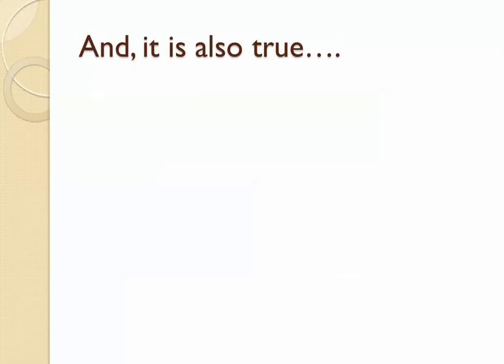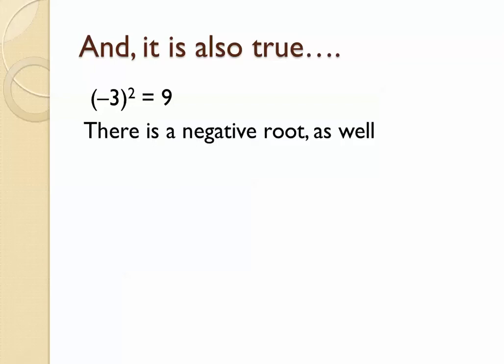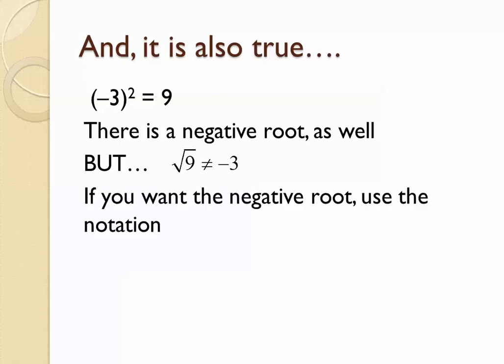Now it's also true that negative 3 squared is equal to 9, so we do have to talk about the negative roots. But if we want the negative root, we're not going to say the square root of 9 is equal to negative 3. If we say the square root of 9, we're talking about the positive root. If we want the negative root, then we're going to say the negative square root of 9, and that will give us negative 3. That way we can keep them straight, because they're two different things.